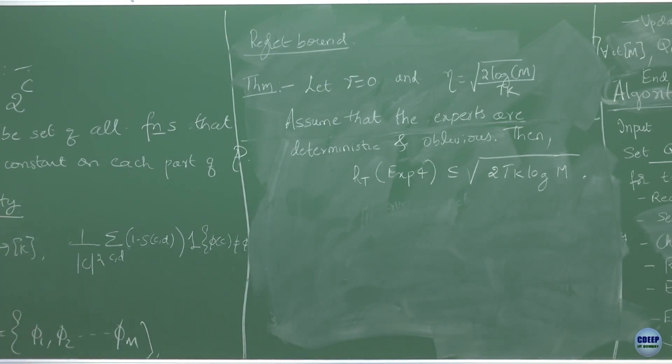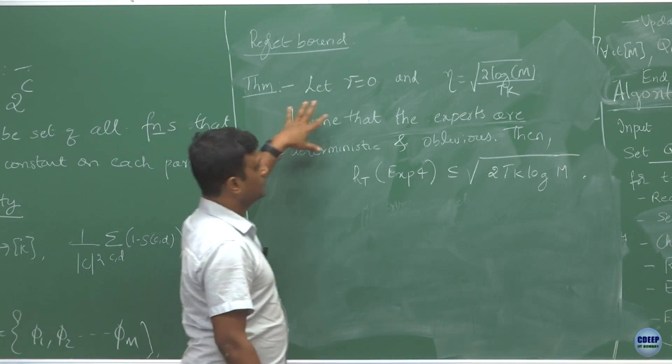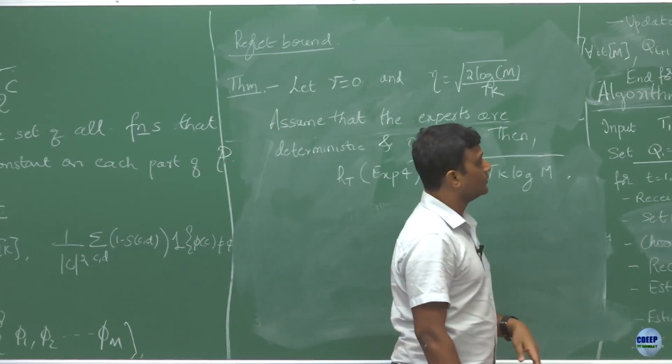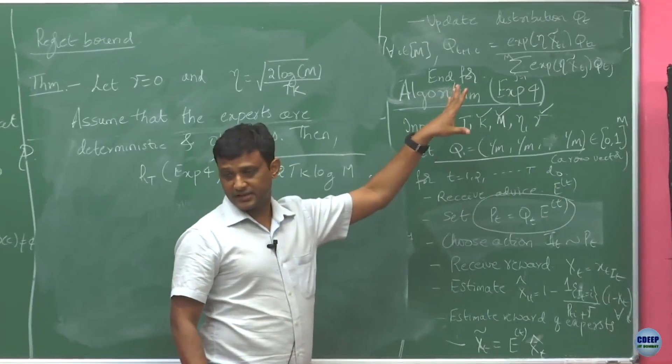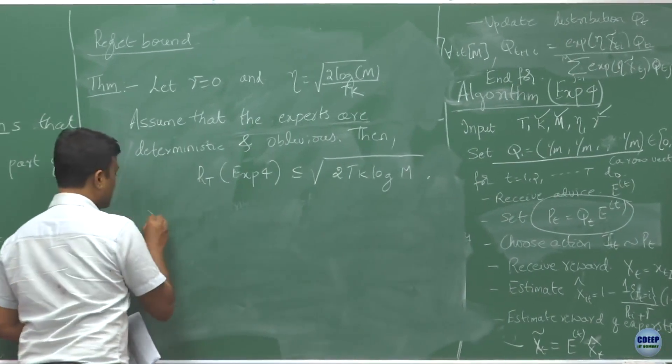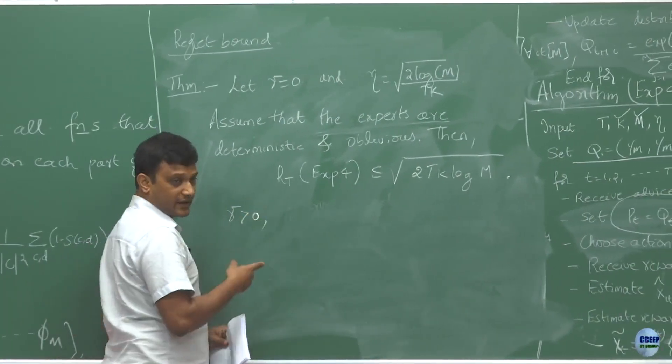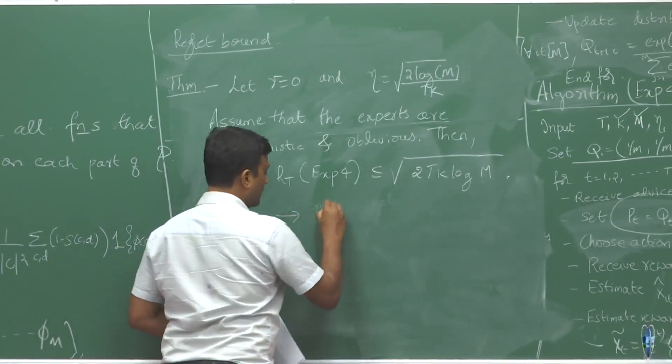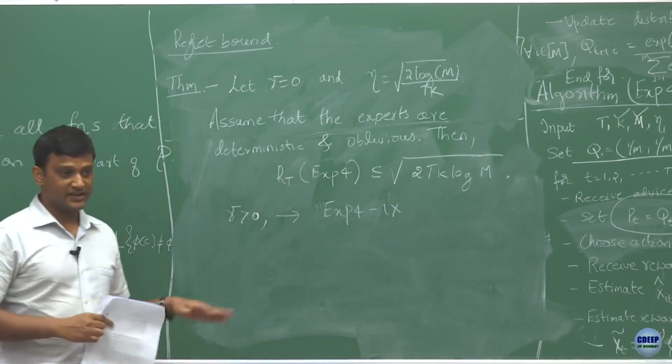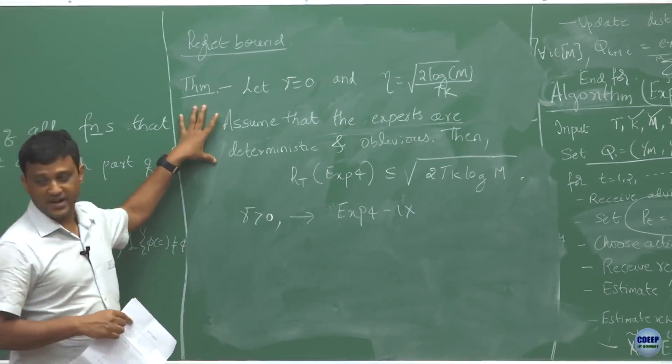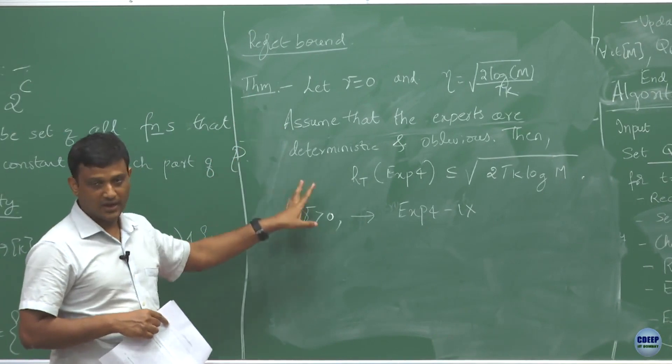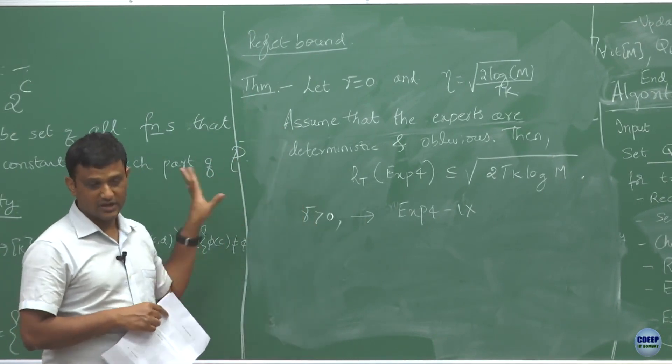Notice that we are setting gamma to be 0 in this statement. When we have gamma equals 0, we call this EXP4, but when gamma is greater than 0, we call it EXP4IX. The result stated here is for the case gamma equals 0, and you can work out that for gamma greater than 0 a similar bound holds.